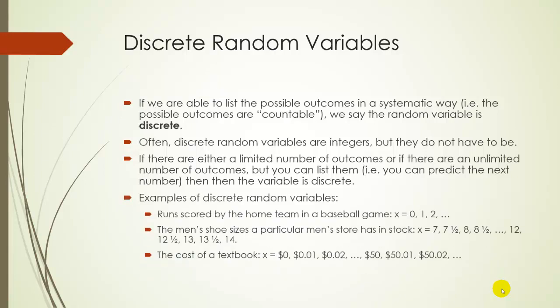So examples of a discrete random variable may be the runs scored by a home team in a baseball game. You could have zero runs, one run, two runs, three runs, etc. Men's shoe sizes stocked at a particular store. In this case, they might have all the shoe sizes from 7 to 14, but keep in mind that only whole sizes and half sizes will be possible. So it'll still be discrete.